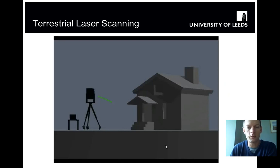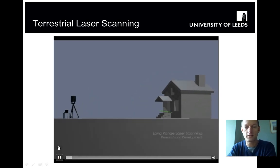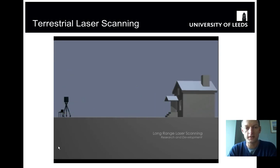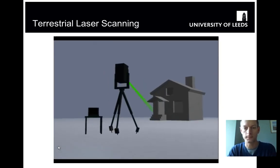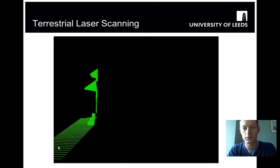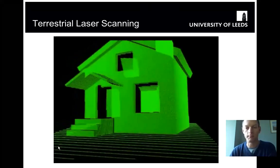Now we can mount laser scanners on survey tripods for ground-based applications. Terrestrial laser scanners send out a laser which is reflected off a surface back to the scanner, and the time it takes to do that is recorded to calculate the remote position. The scanner does this many tens of thousands of times a second to build up a three-dimensional point cloud.